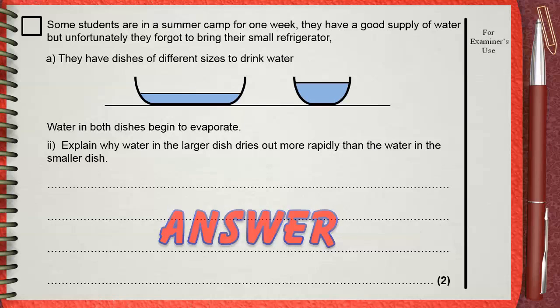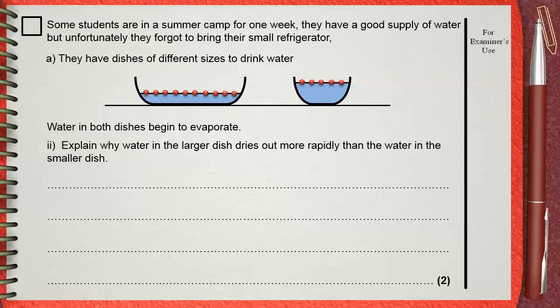Just as we studied before, evaporation is for surface molecules only. So if you have the same amount of water in two different dishes, the water in the dish of larger area will evaporate more rapidly because it has more molecules on the surface.